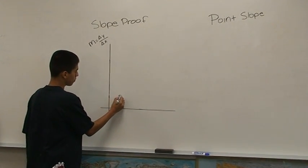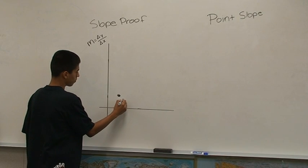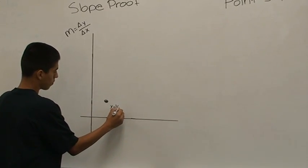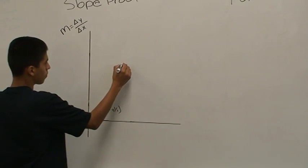Slope we start off with two general points, x1, y1, and x2, y2.